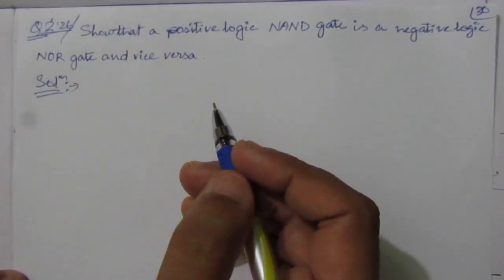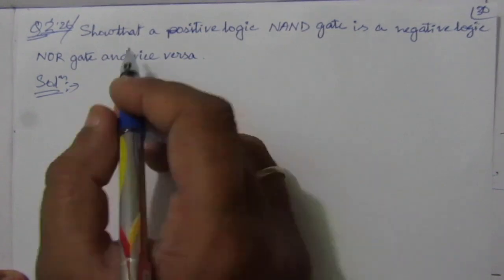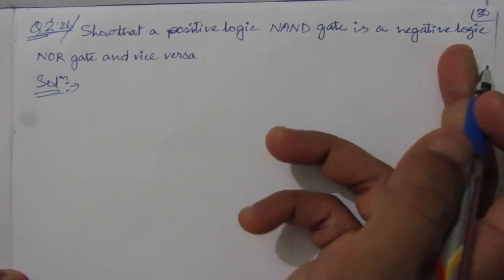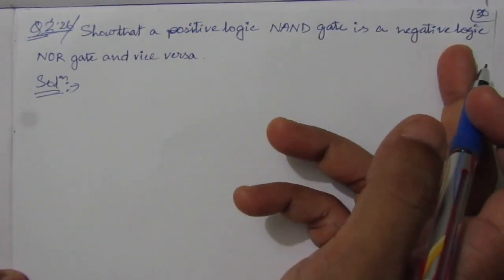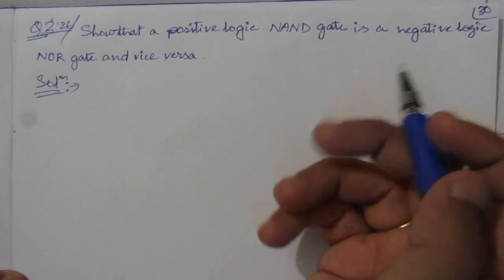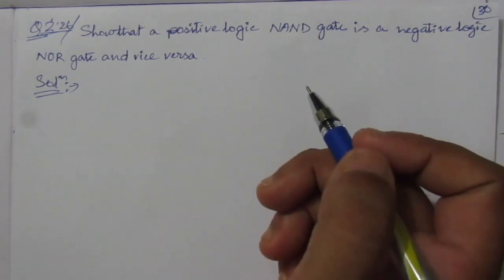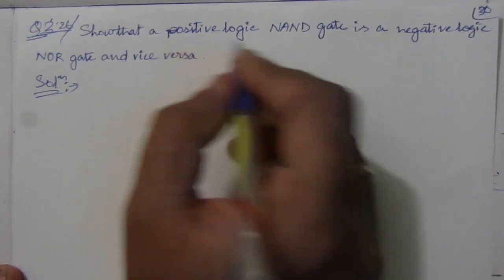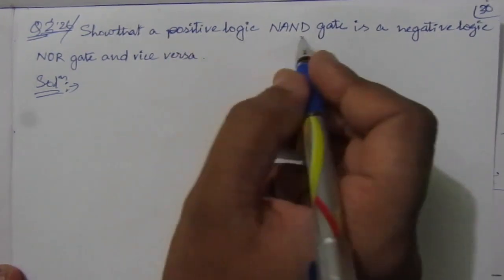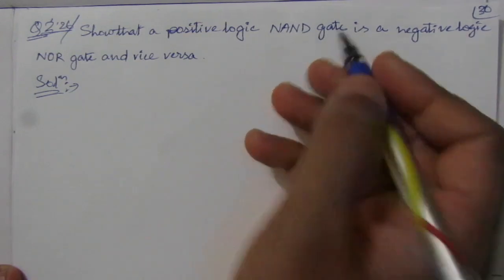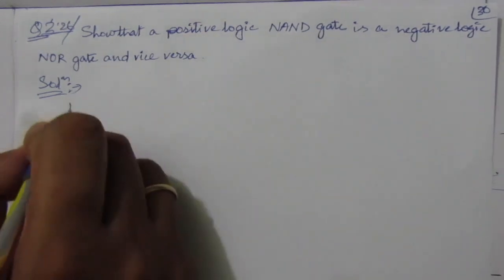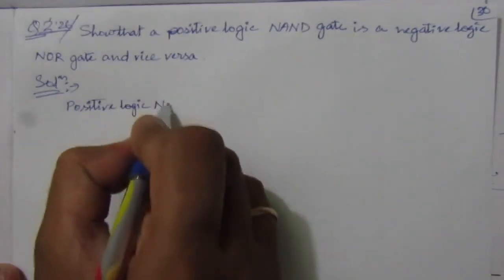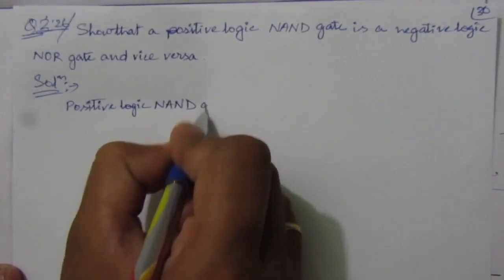The problem is: show that a positive logic NAND gate is a negative logic NOR gate and vice versa. We can show it via the truth table. First of all, let us draw the positive logic NAND gate.